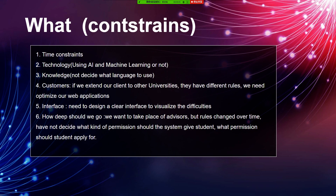Third is knowledge constraints: we have not yet decided what programming language to use and still need to learn a lot. Our plan is to use a Python or Java framework, but it has not been decided yet. Fourth is customers: if we want to extend our application to other universities, those universities have their own rules, so we need to change rules and optimize our web application accordingly.